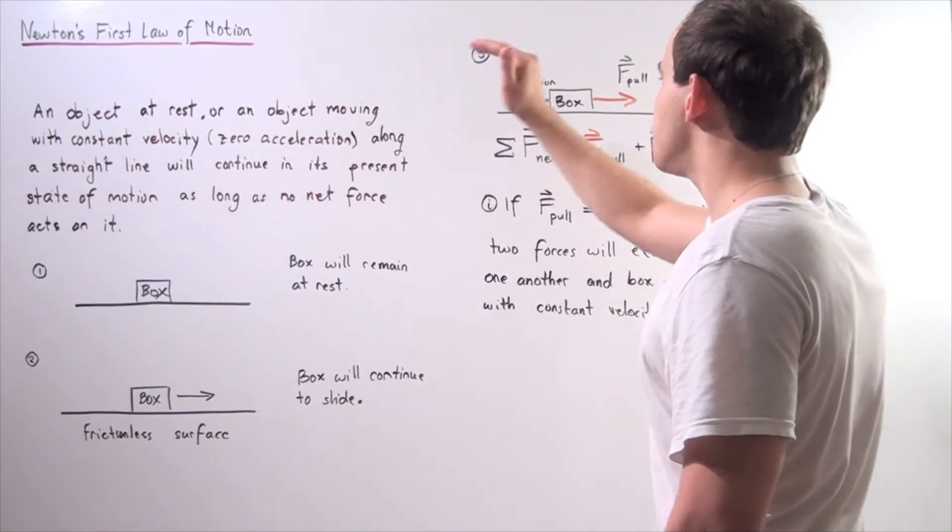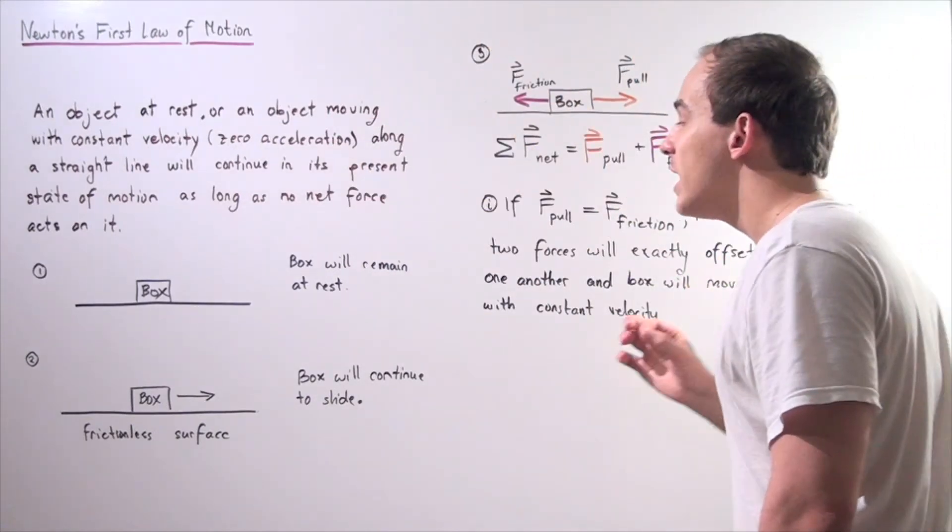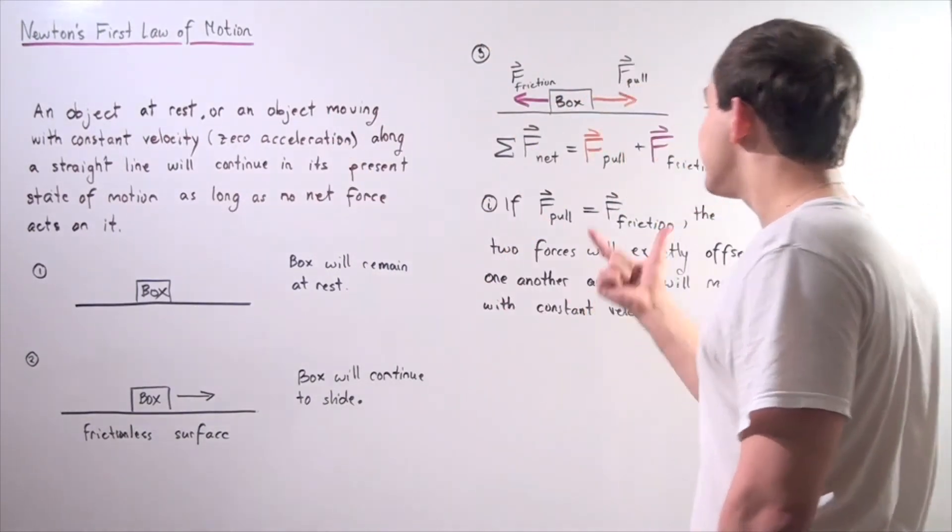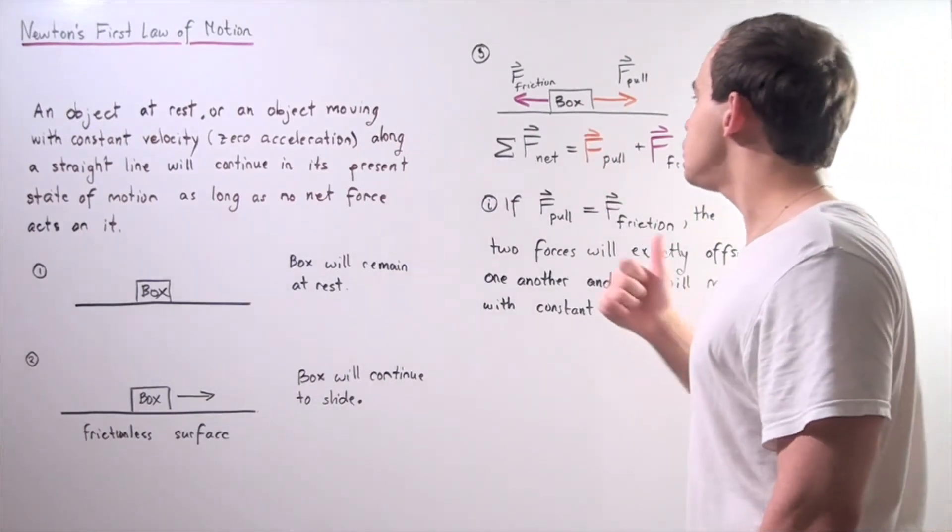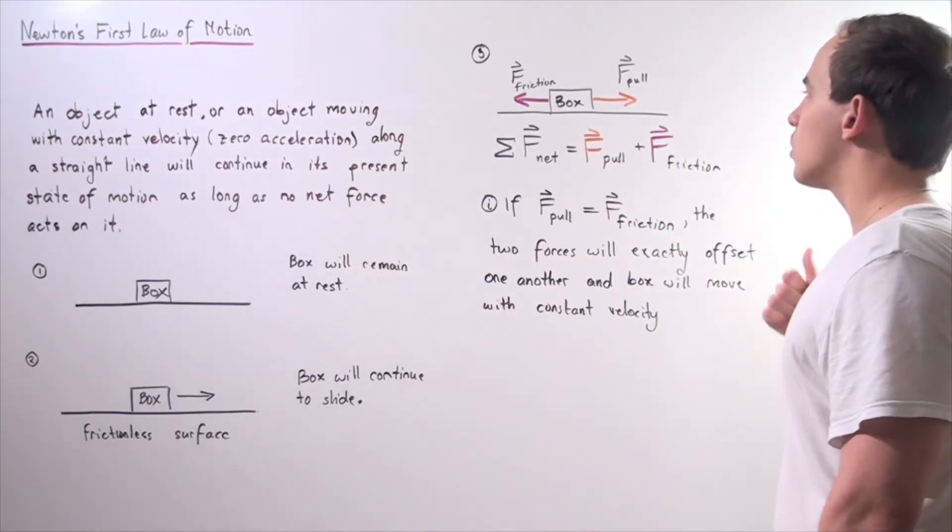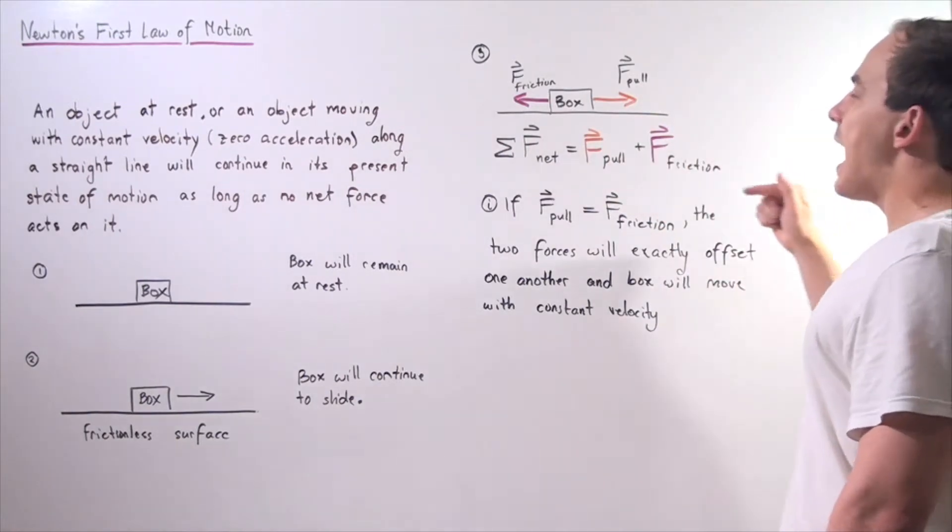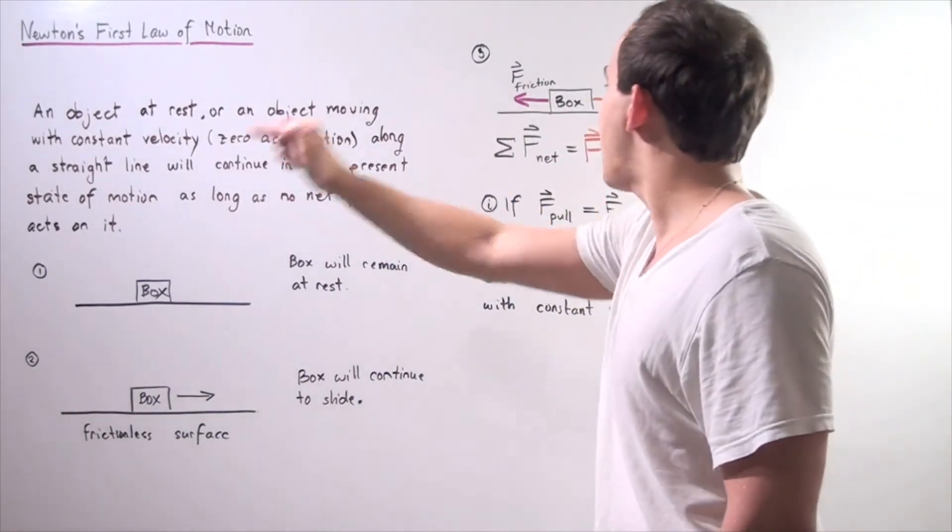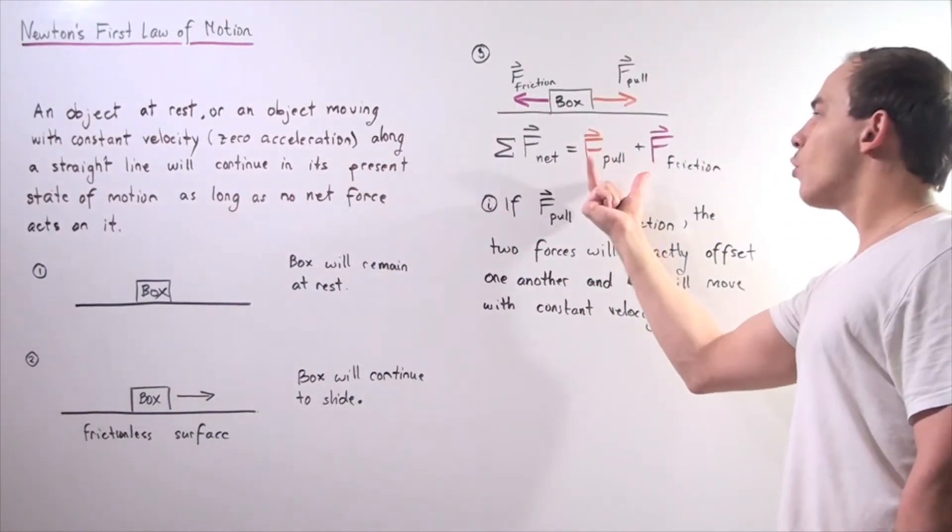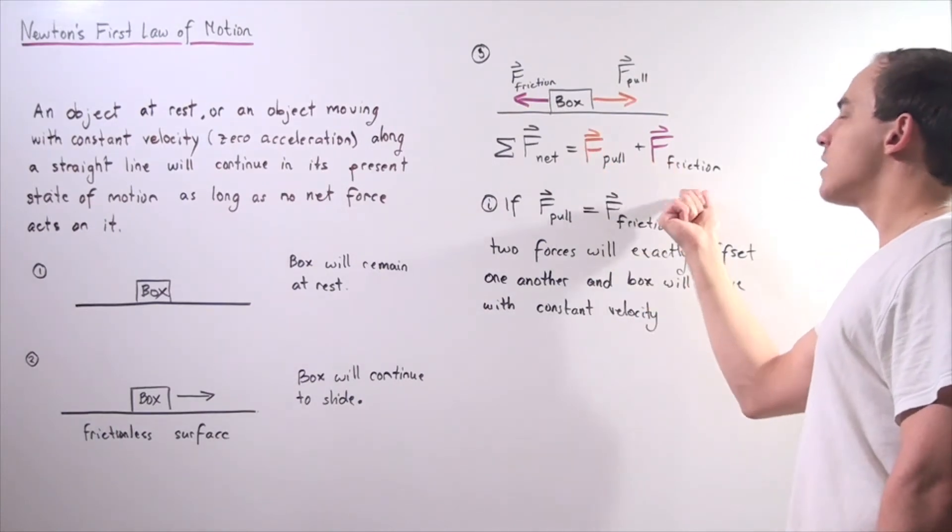So that means one force is going this way along the x-axis. The second force is going in the opposite, in the negative direction, along the x-axis. So my net force is the sum of these two forces. Let's choose the positive to be our direction this way, our negative to be direction backwards.